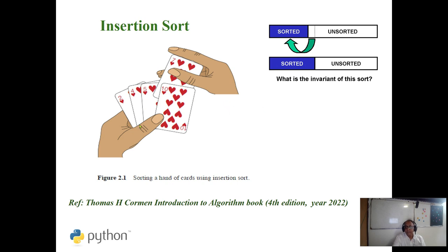Insertion sort is nothing but whenever we play a game of cards — we generally place like this: 7 here, we got 10 here, if something comes we will sort it each one. So any unsorted element we will put it into sorted. This blue portion will grow and the unsorted portion will become nil. This is the basic algorithm in insertion sort.